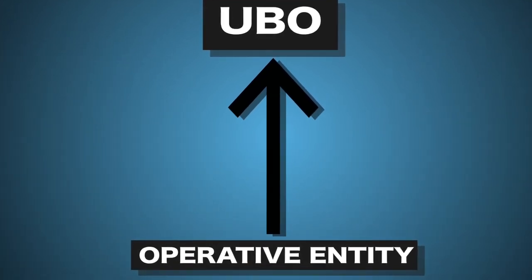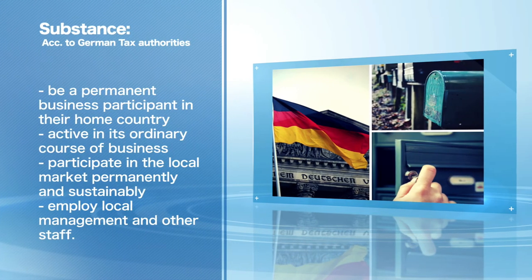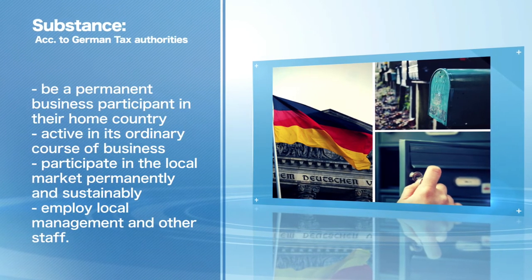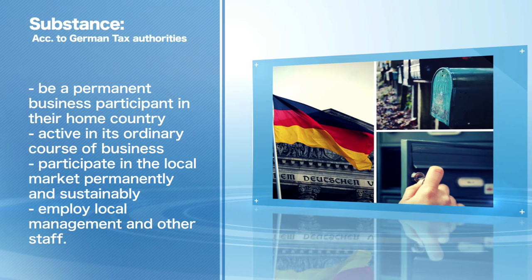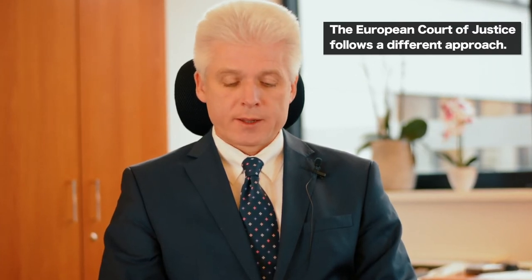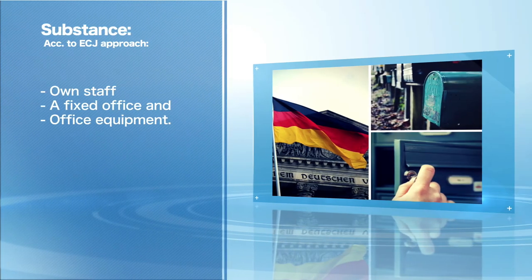Substance requirements depend on the kind of business the company is doing and the rules of the jurisdiction you are looking at. Under German law and the interpretation of the German tax authorities, the company must be a permanent business participant in their home country, active in its ordinary course of business, participate in the local market permanently and sustainably, and employ local management and other staff. However, the international approach — also followed by the European Court of Justice — follows a different approach, where the company should play an active role in the economic life of the country of residence. For this, it is normally sufficient if the company has its own staff, a fixed office, and office equipment.